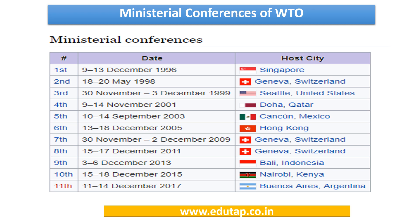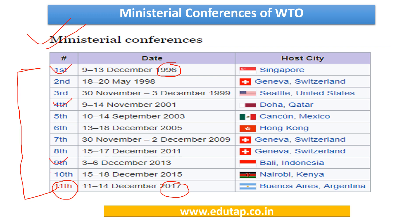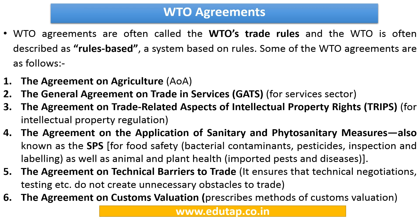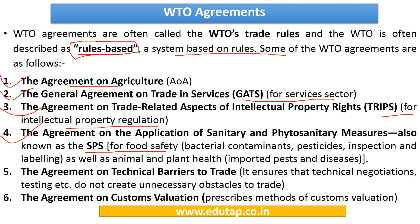The given picture shows all 11 Ministerial Conferences of WTO starting from 1996 to 2017. Remember the year and host city of the 1st, 4th, 9th, 10th, and latest 11th conferences. WTO is often described as a rules-based system. Remember the names of important WTO agreements and their purposes: Agreement on Agriculture, GATS for the Service Sector, TRIPS for Intellectual Property Regulation, and SPS for Food Safety as well as Plant and Animal Health.